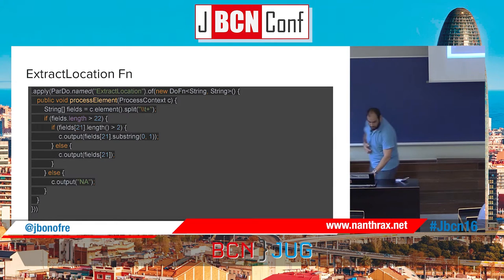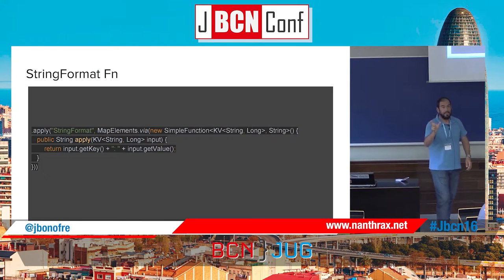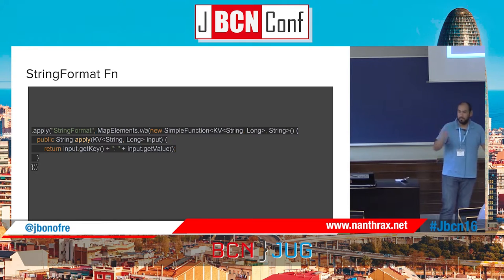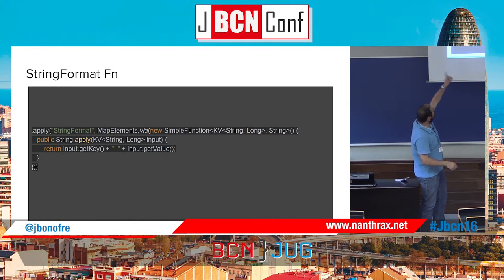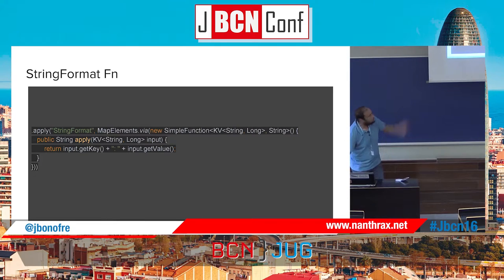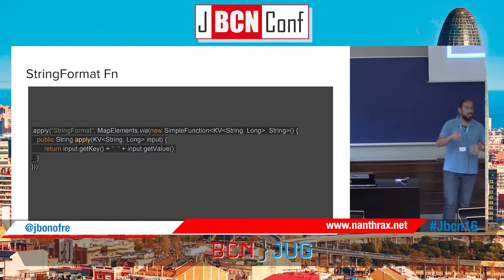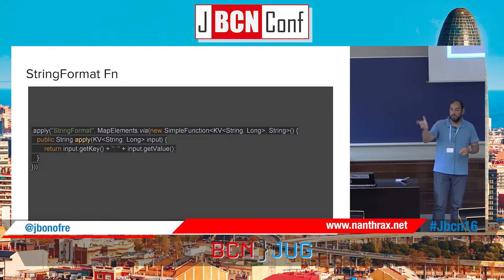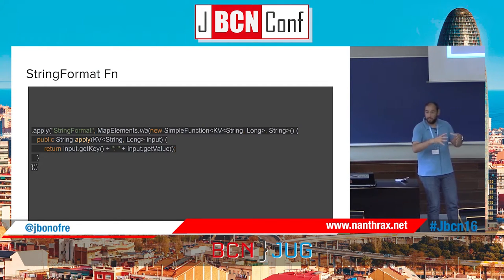Then I need to count all elements of the PCollection with the same country name — counting Spain, Spain, Spain together, or France, France, France. To do that, instead of creating my own transform, I use an existing built-in: Count.perElement(), which automatically does the counting. Then I apply a MapElements transform that converts the key-value pair of string-long back into a string that I can send to TextIO writer.